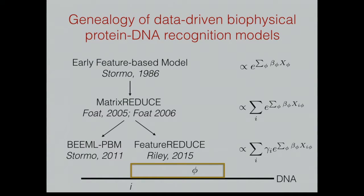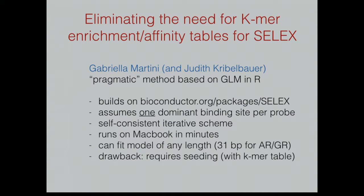Thinking about where we are with the equivalent development of algorithms for SELEX feature-based models, there have been successful applications — for instance by Remo's lab with Martha Bullock, where if you know where the binding window is, you can align sequences and get enrichment scores from K-mer table approaches, then dissect those in terms of base and shape features. What is not yet captured is the fact that the factor can bind anywhere in the SELEX probe. Doing something analogous to taking the sum over the whole probe and fitting these parameters is something we've been working on very actively, and I want to show results from two different algorithms — one an approximate algorithm implemented in R.